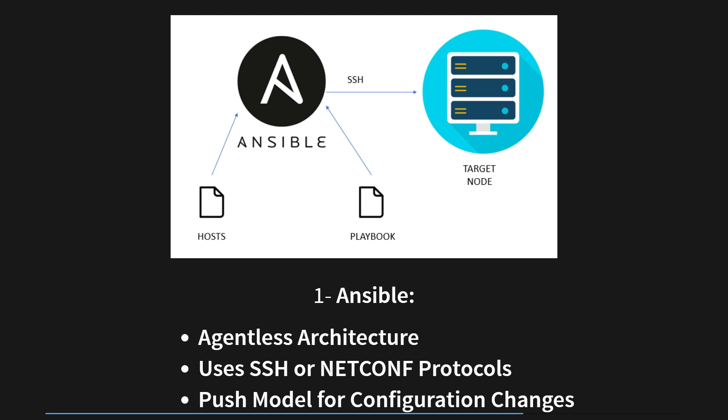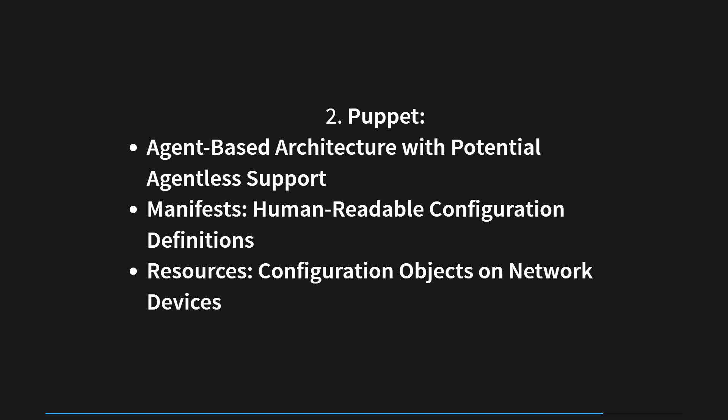Puppet is a widely used configuration management tool that predominantly adopts an agent-based architecture to support network devices, although certain devices may necessitate an external host with a proxy agent for agentless operation. To define configurations, Puppet relies on manifests — human-readable text files specifying the desired state of the network device. The key building blocks in Puppet are resources, representing configuration objects on the network device. By leveraging these resources, administrators can efficiently manage and enforce desired configurations, ensuring consistency and reducing manual efforts in maintaining network devices.